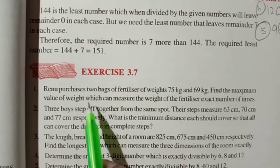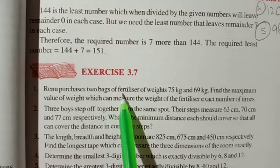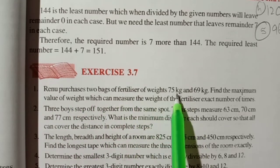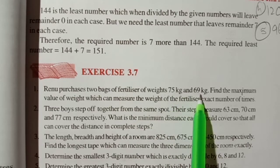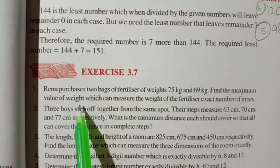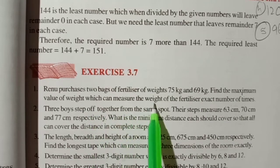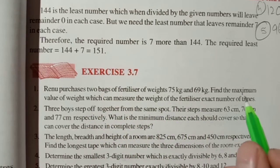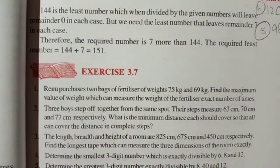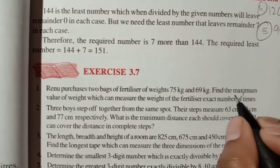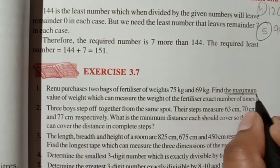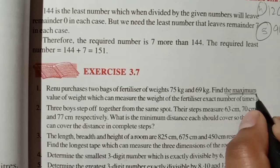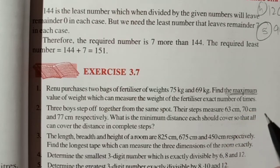Here Renu purchased two bags of fertilizer, one bag weight is 75 kg and another bag weight is 69 kg. Find the maximum value of weight which can measure the weight of the fertilizer. If the question is saying find the maximum value of weight, it means we have to find the HCF. Because it is maximum, we have to find the highest. So HCF will give the answer.